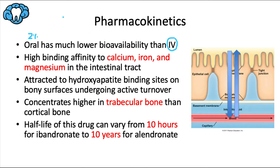For the oral dose, why is it so low at 2%? A lot of it is lost during the absorption process. Bisphosphonates have a high binding affinity to divalent cations like calcium, iron, and magnesium in the intestinal tract, explaining why absorption is decreased so much — especially if you take the drug near meals, specifically with orange juice, milk, or antacids, which are loaded with some of these divalent cations.